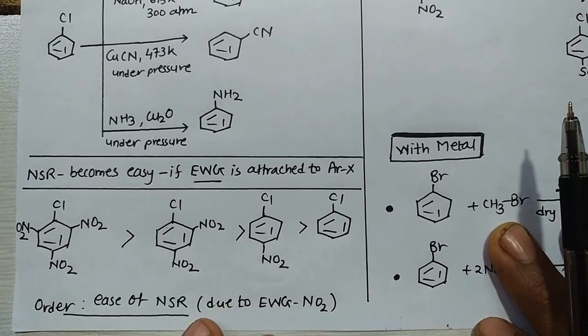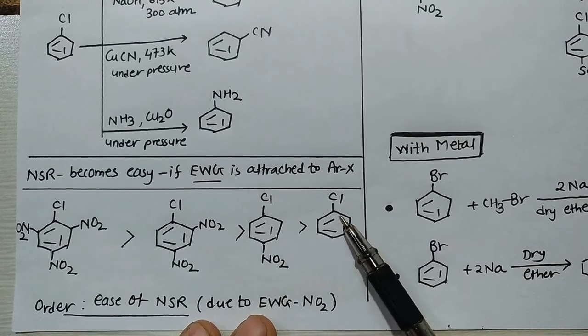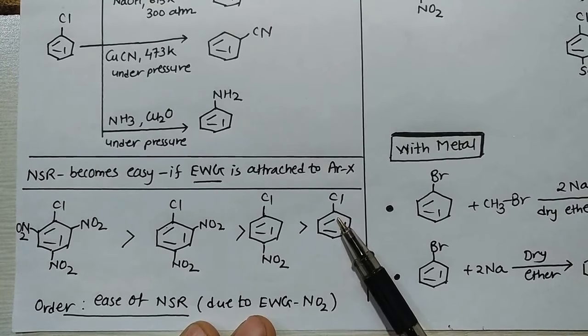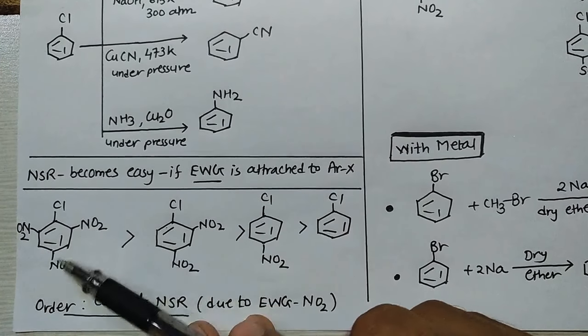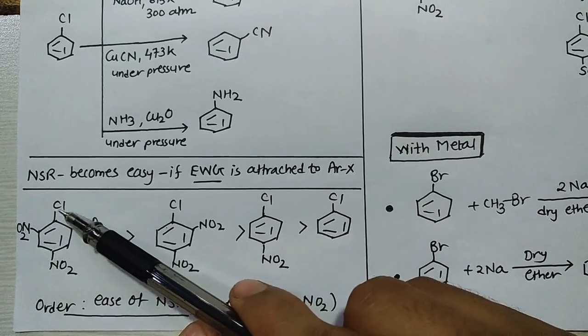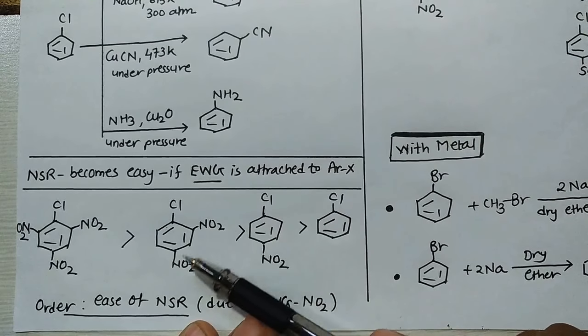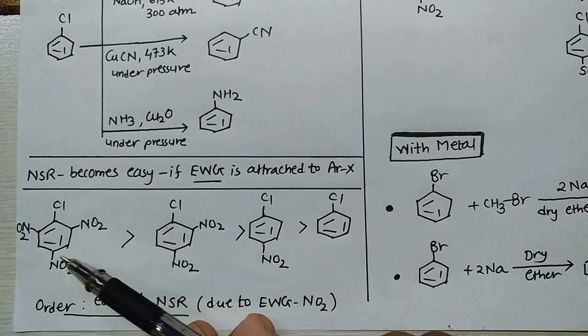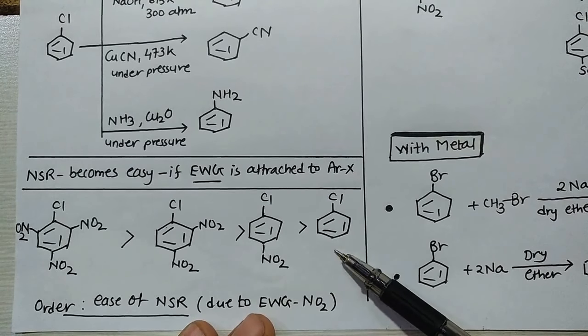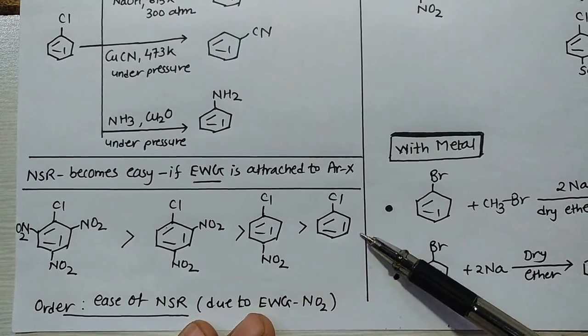For example, in MCQ questions you are given four compounds and asked the order of which chlorobenzene undergoes NSR most easily. Certainly, the one with three nitro groups has three electron withdrawing groups, so it will be easiest to substitute. With two nitro groups it's also easy but not as much as three. With single nitro it's less, and with no nitro groups it's least. So for NSR, reactivity will be highest, less, less, and then least.